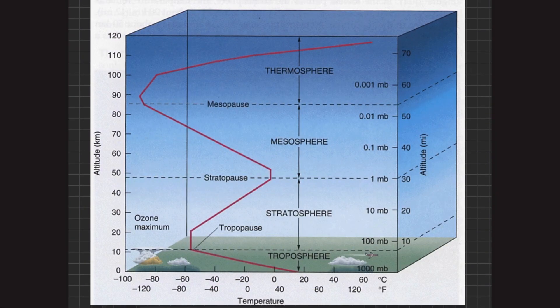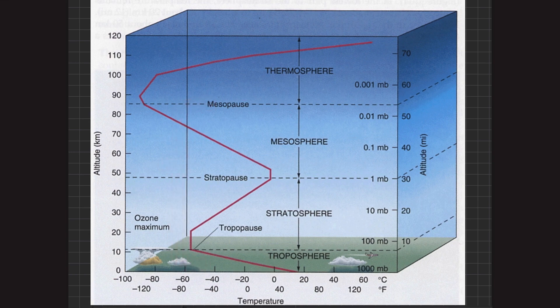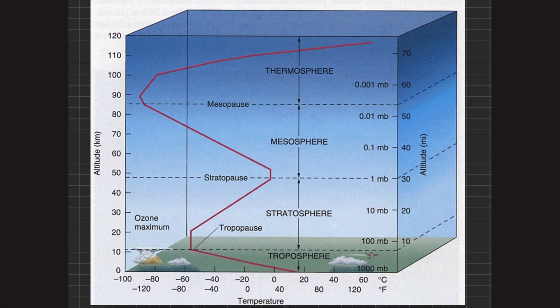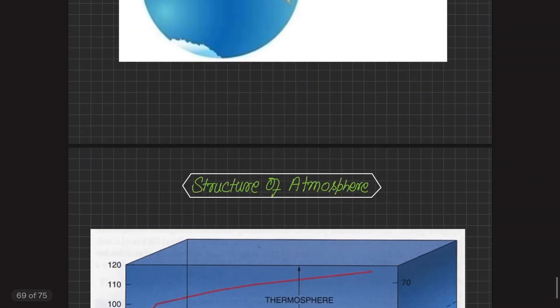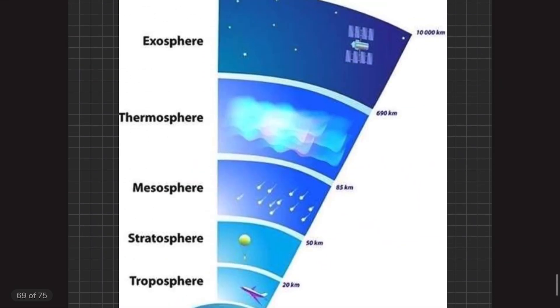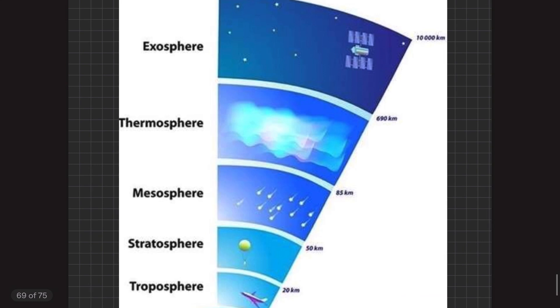As seen in the diagram, all layers from the troposphere to the mesosphere make up the homosphere, whereas layers from the mesosphere upward through the exosphere are called the heterosphere of the atmosphere.